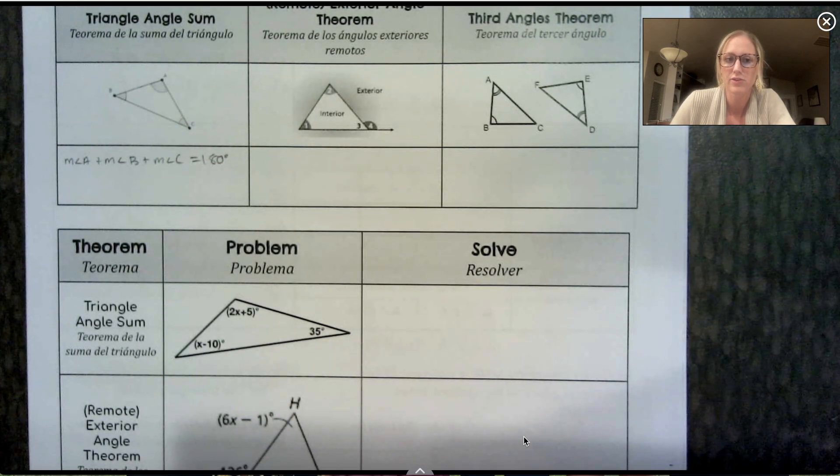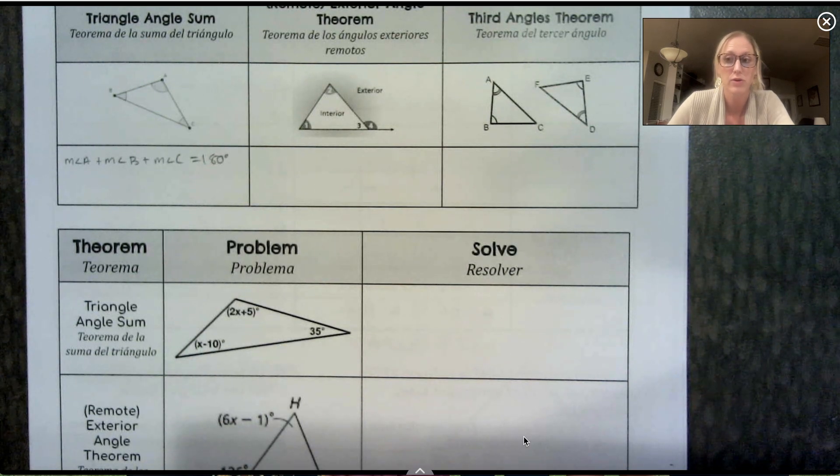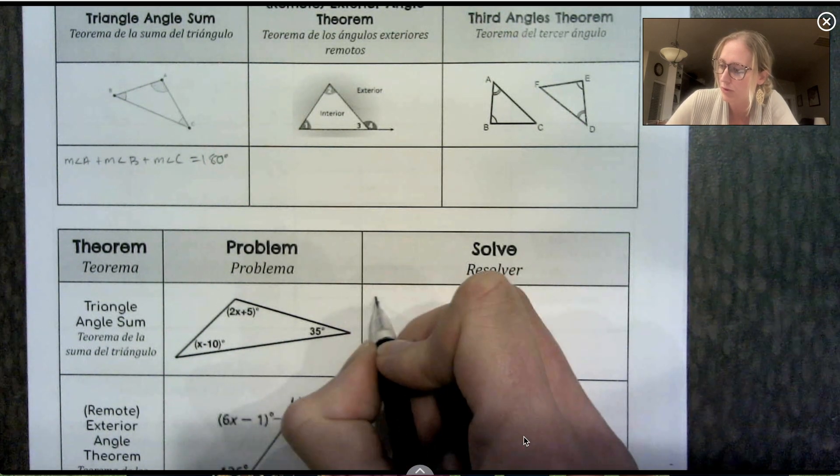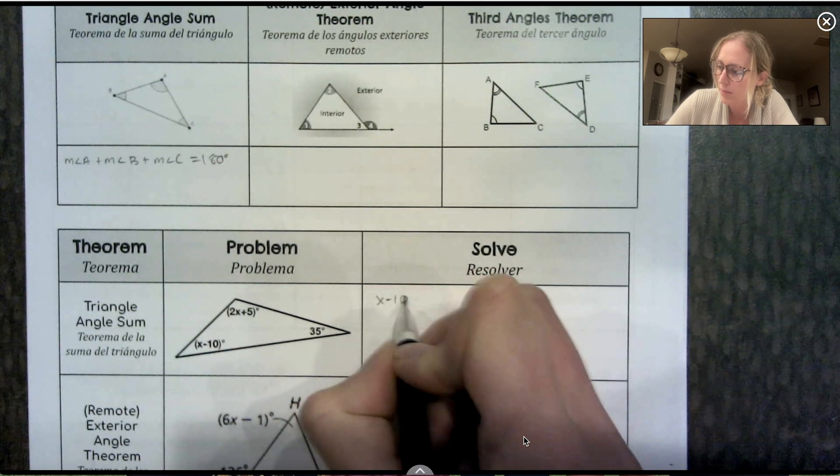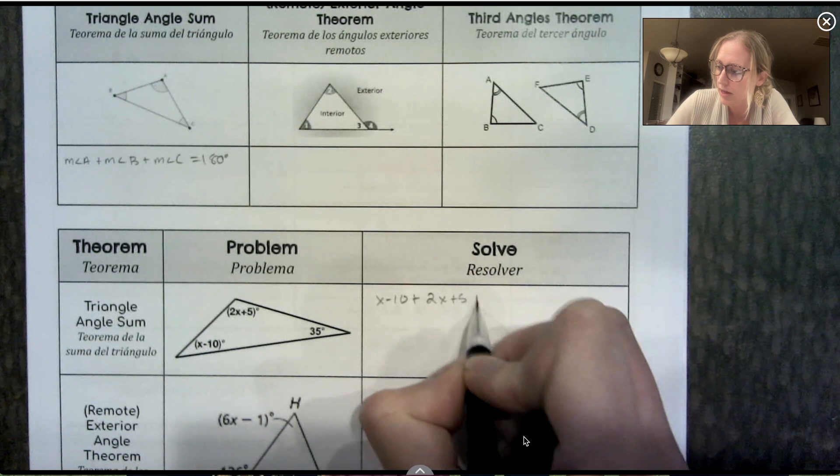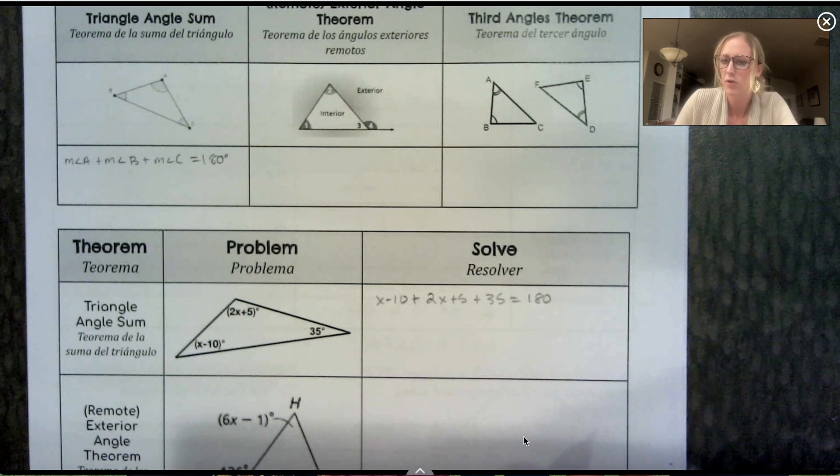So this first problem is going to use the triangle sum theorem. If I know all three of these angles add to 180 and I want to solve for x, I can set up an equation that combines all three of those. So I've got x minus 10 plus 2x plus 5 plus 35 equals 180. And then we can solve for x.